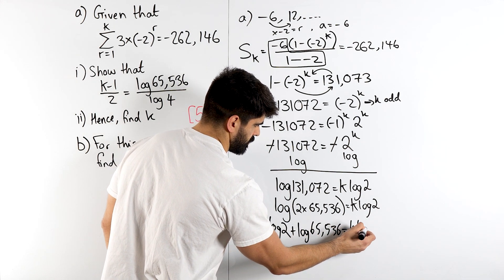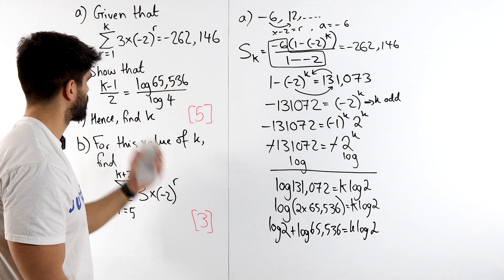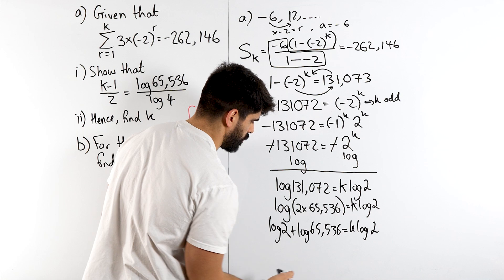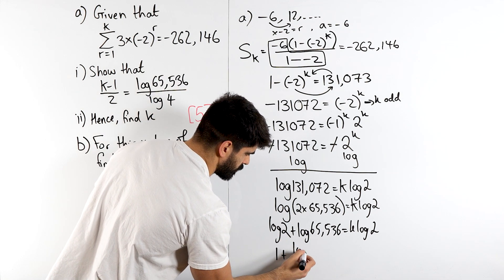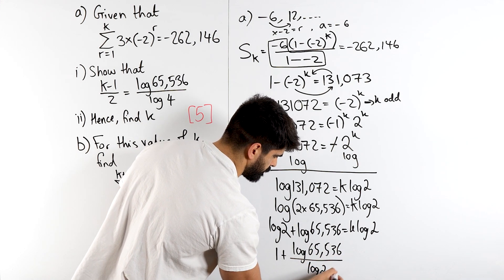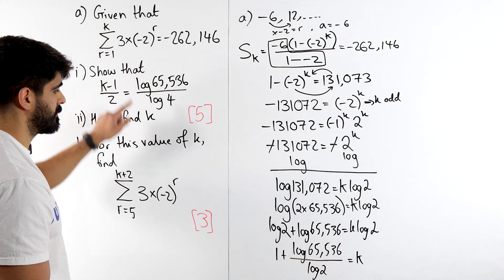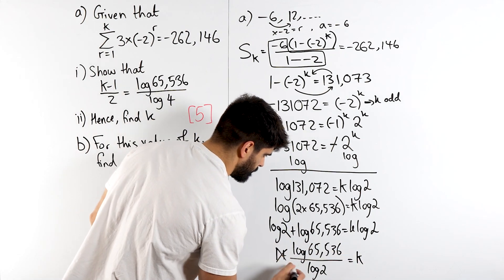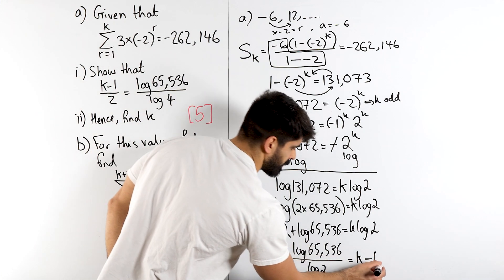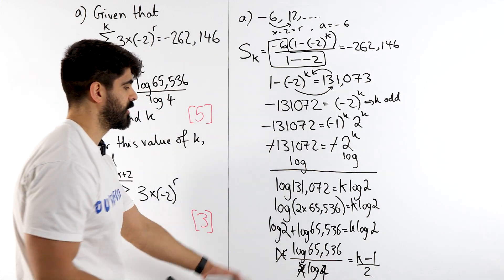We can write that as log 2 plus log 65,536 is k log 2. And then we can just divide through by log 2 k minus 1. Dividing through by log 2, dividing that by log 2, you get 1 plus log 65,536 over log 2 is k. The next thing we're going to do is going to minus 1. So I'm going to minus the 1 from the both sides. And then we divide both sides by 2. Now when I divide this by 2, the 2 here goes to the denominator, which as it comes up to the top, you get 2 squared, which is log 4, and that's now proved.